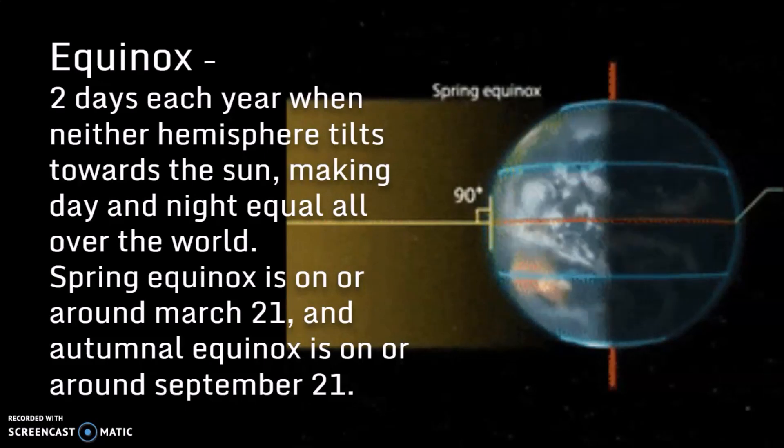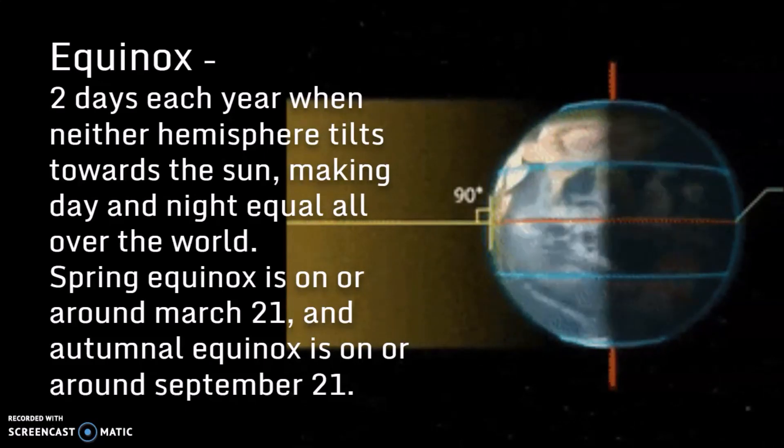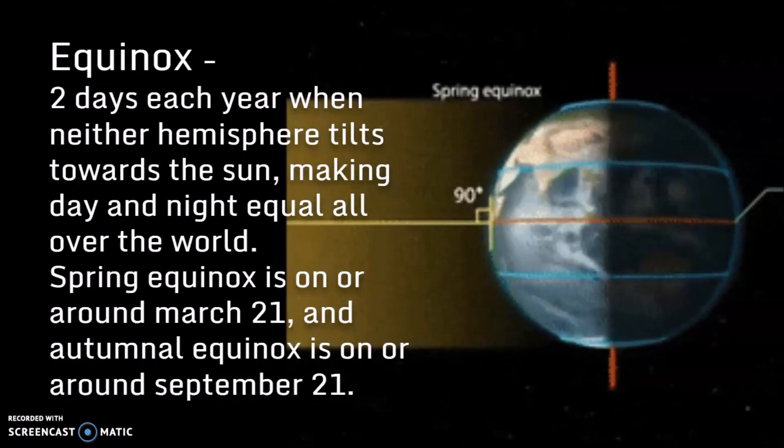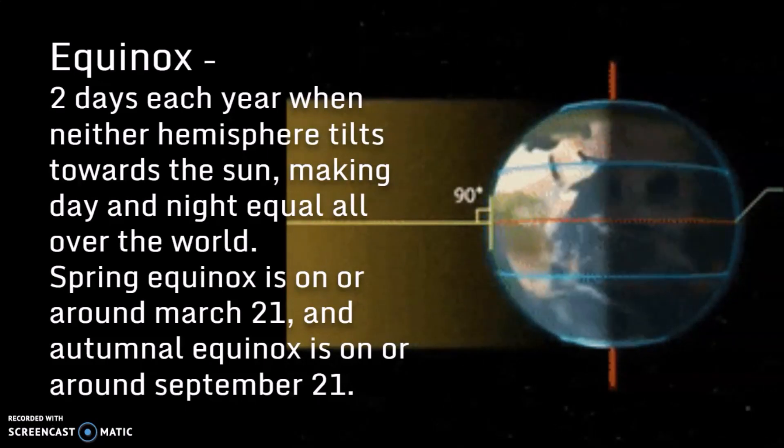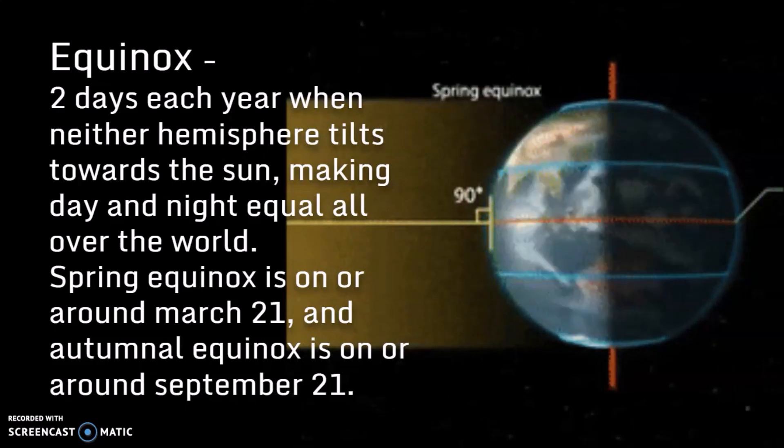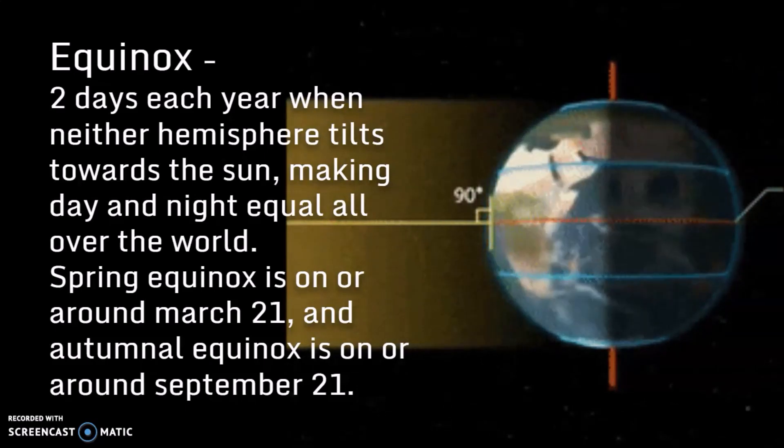Equinox is two days each year when neither hemisphere is tilted towards the Sun, making day and night equal all over the world. The spring equinox is on around March 21st, and the autumnal equinox is around September 21st.